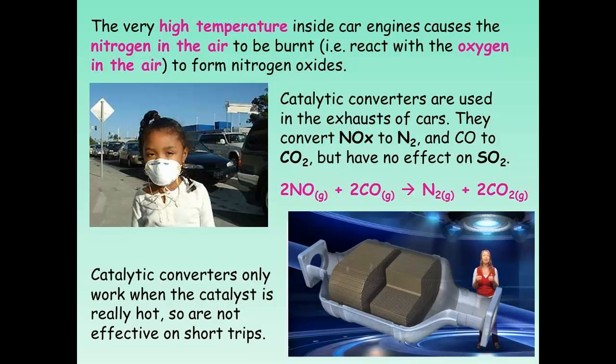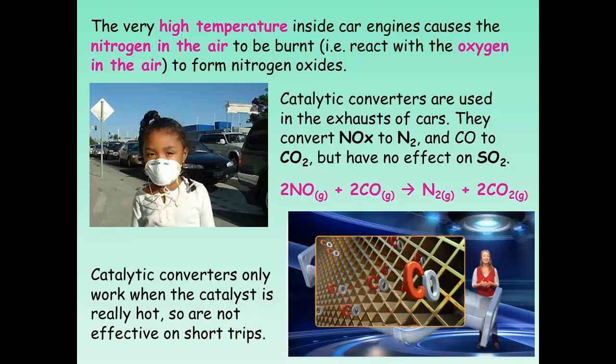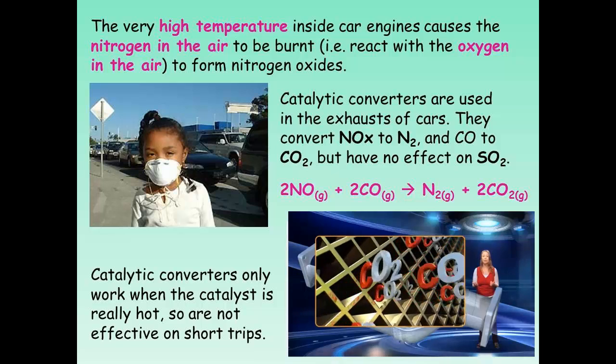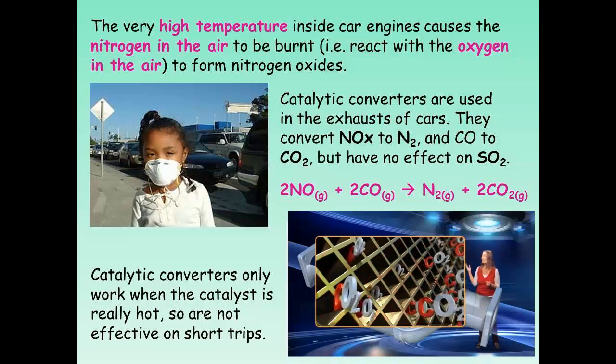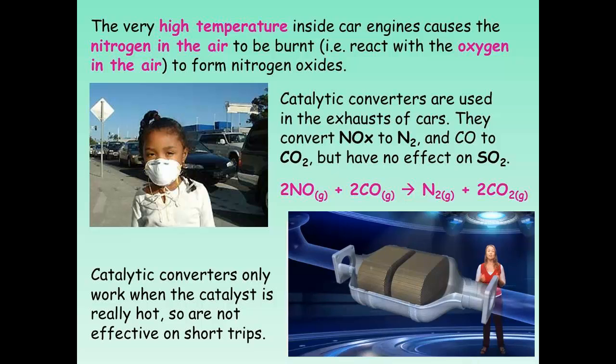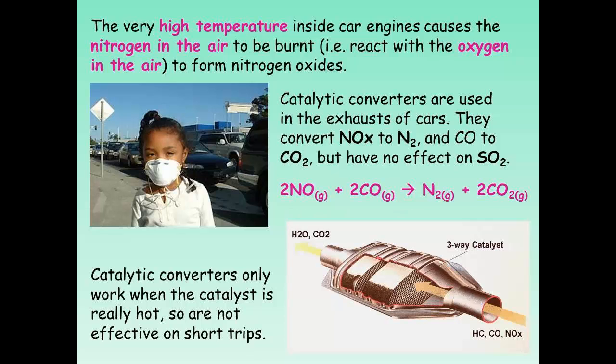Now, the reactions of nitrogen are slightly different. The very high temperatures inside of car engines cause nitrogen in the air, which is usually pretty inert, to react with oxygen forming nitrogen oxides. These nitrogen oxides can cause smog or photochemical smog in the presence of sunlight and other chemicals, for example, unburned hydrocarbons in the air. This is why vehicles are fitted with catalytic converters. The catalytic converters can convert the nitrogen oxide into nitrogen gas. They can also be effective at removing carbon monoxide and turning that into carbon dioxide. However, they have no effect on sulphur dioxide.